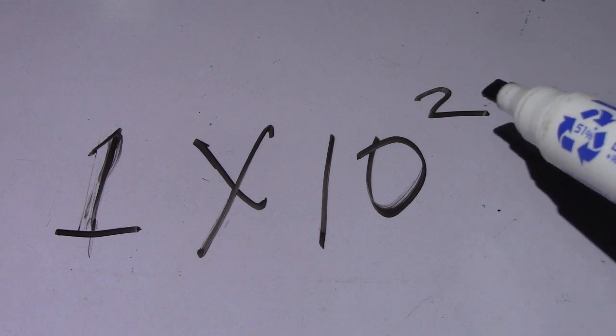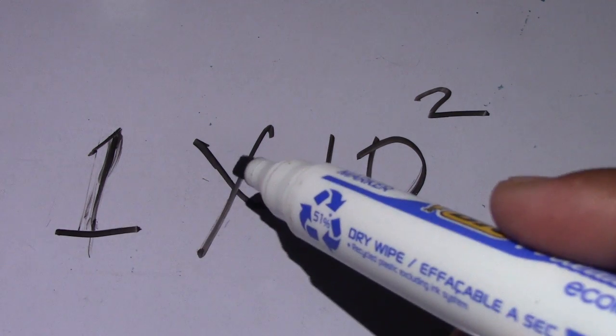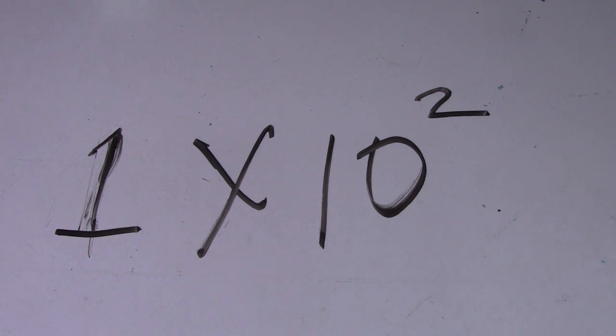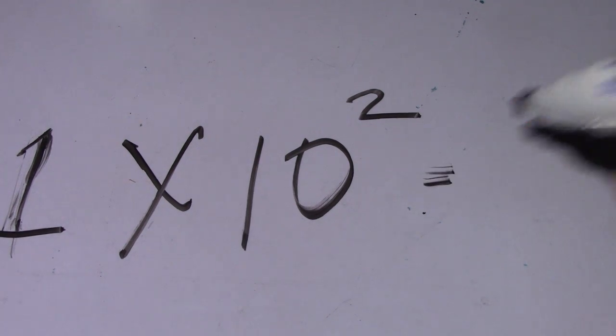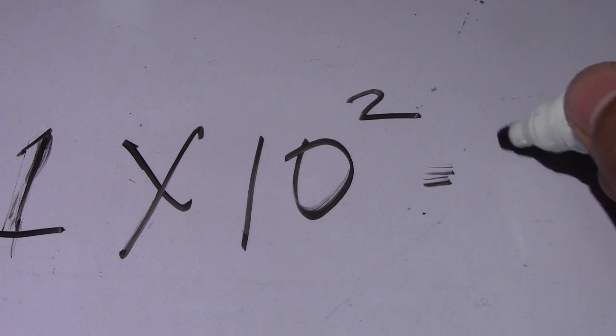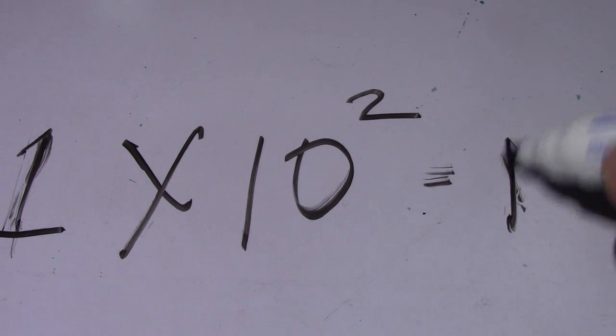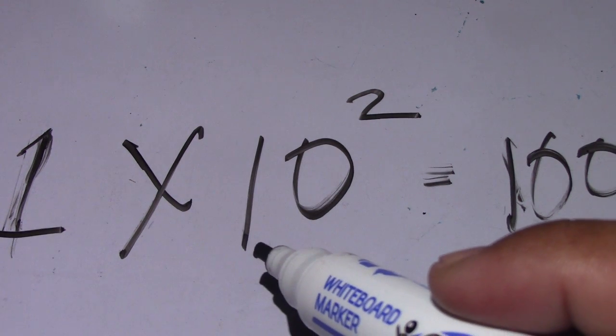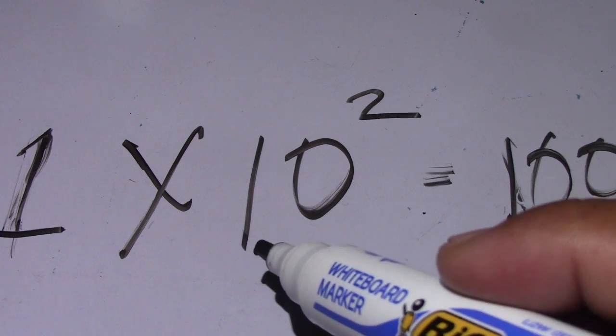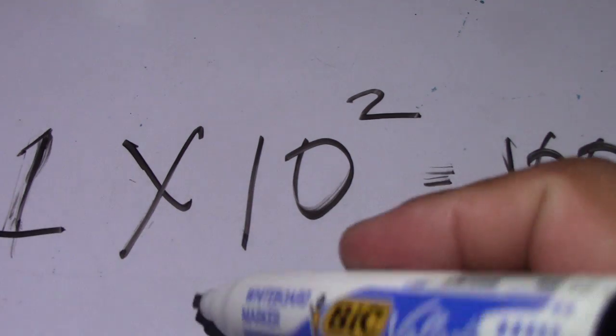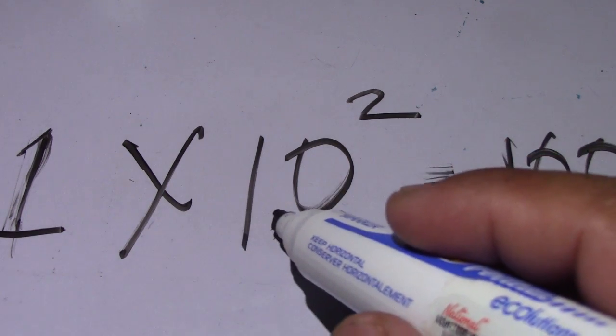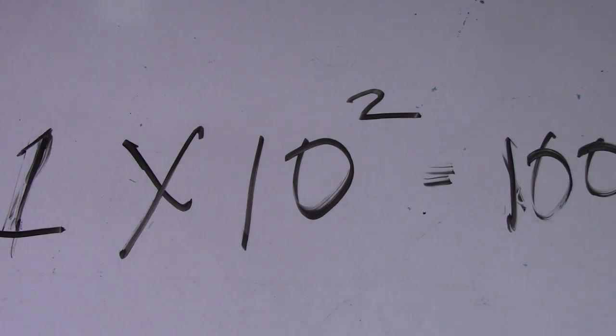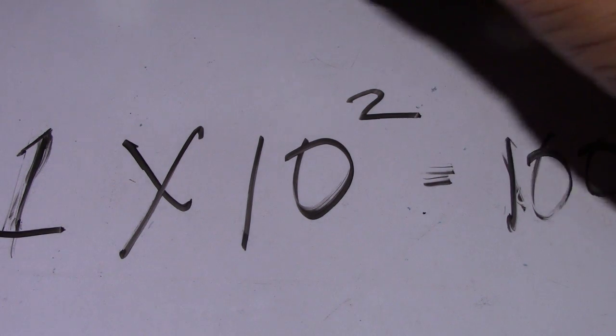How to read that? To read that is one times 10 to the squared. The answer for this is 100. It means this is multiplied by 10. So 10 multiplied by 10 equals 100.